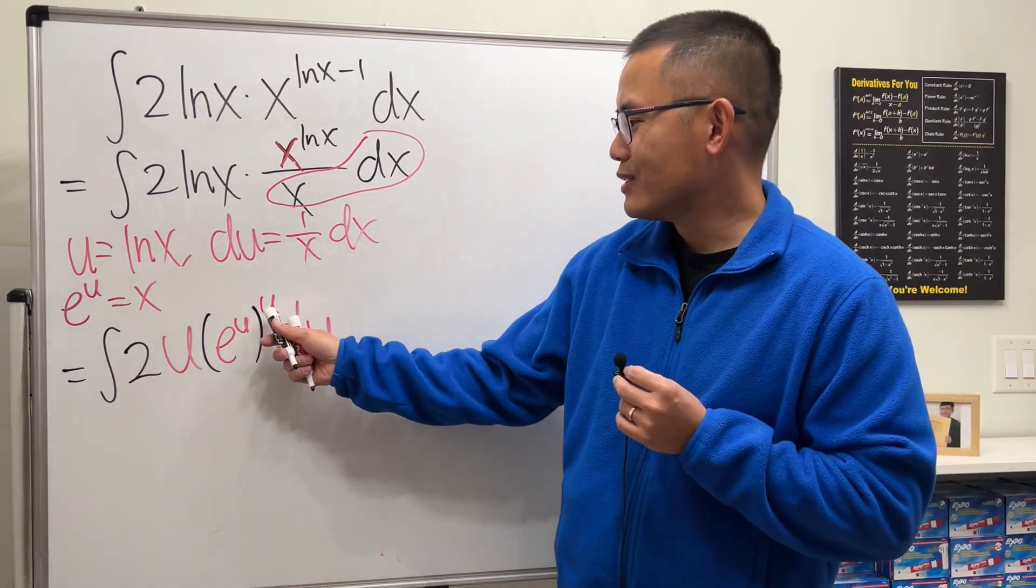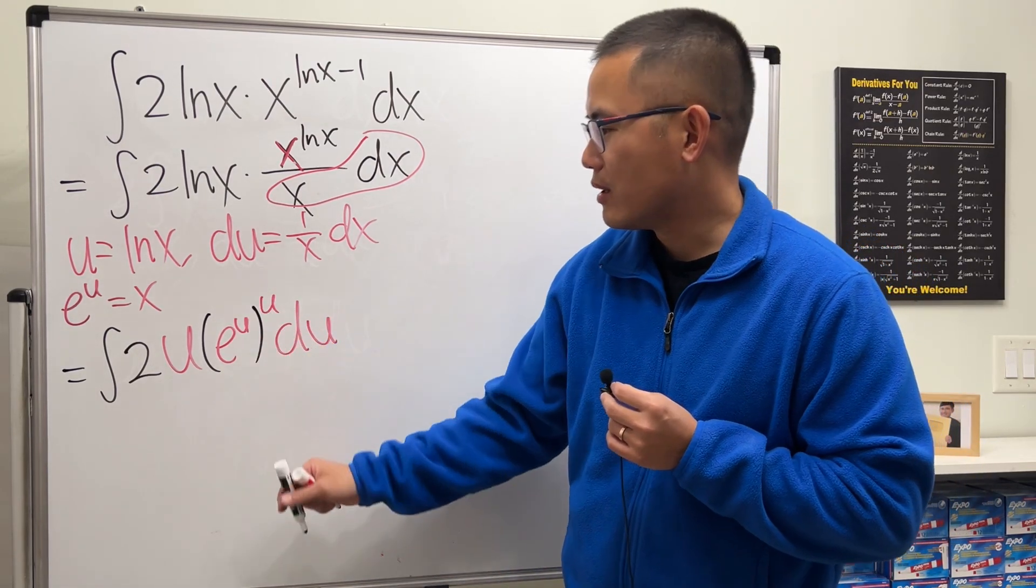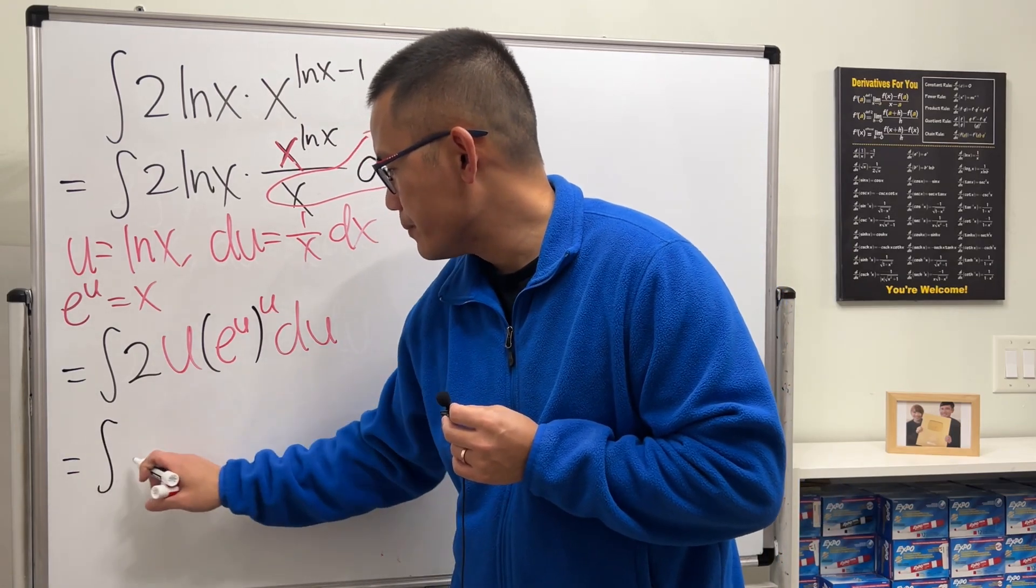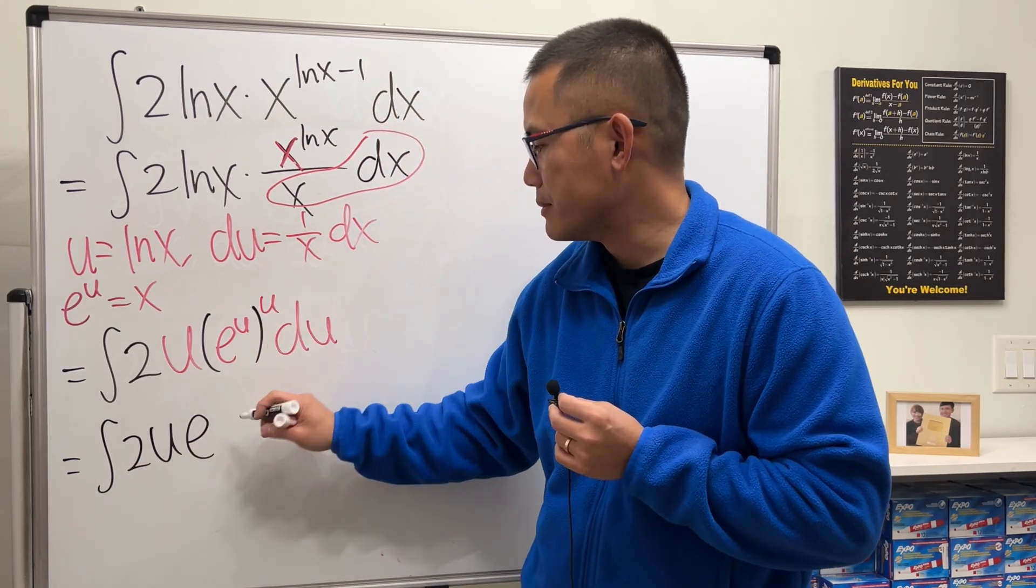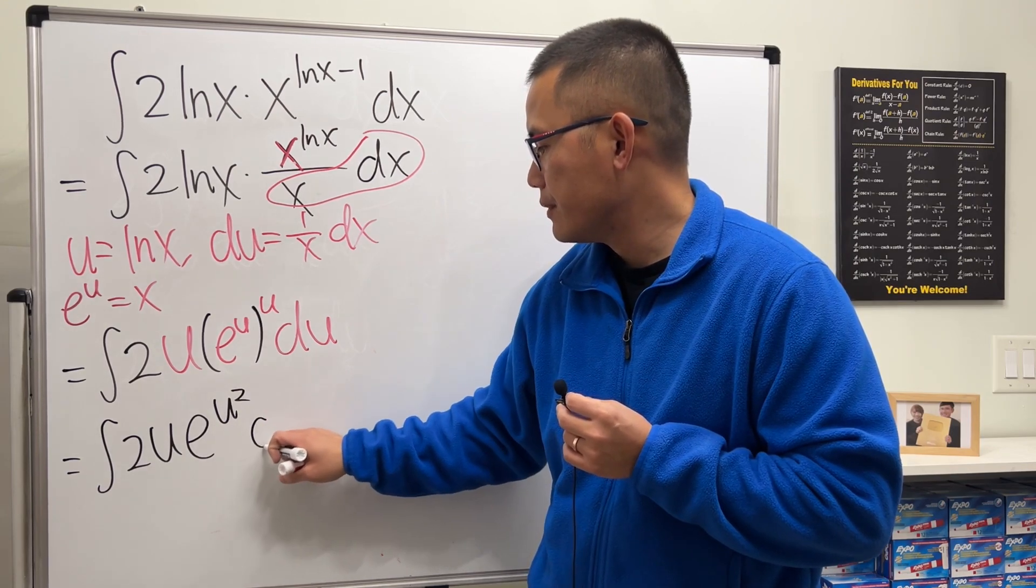And now of course we can just multiply the powers right here, so we get integral 2u e to the u times u, which is u squared du.